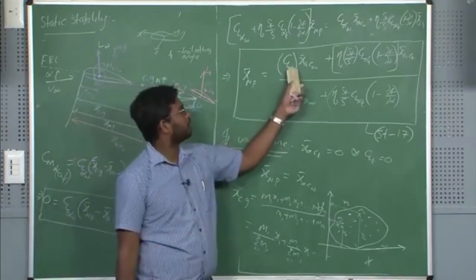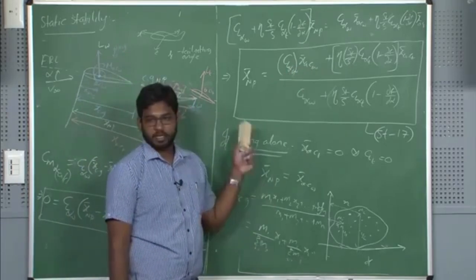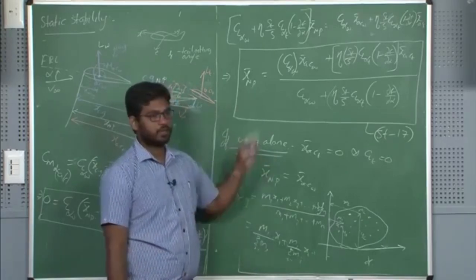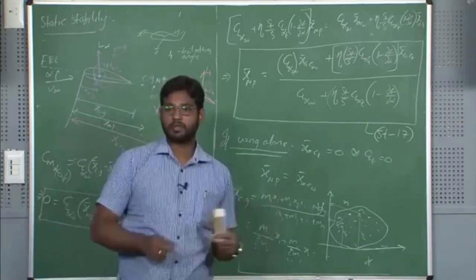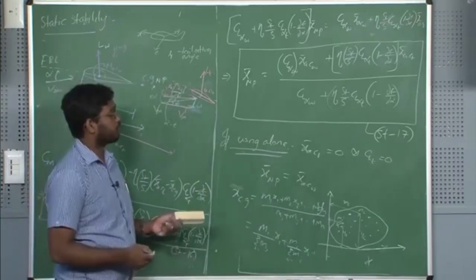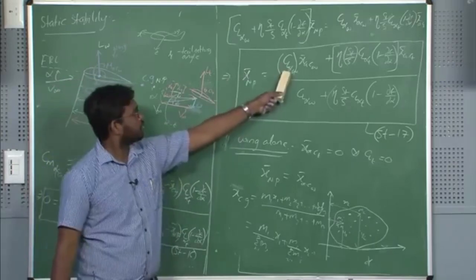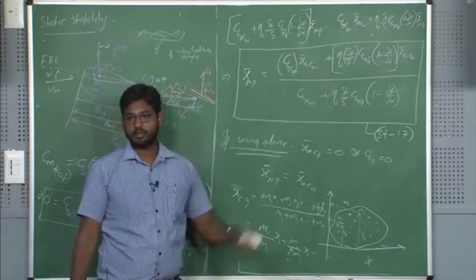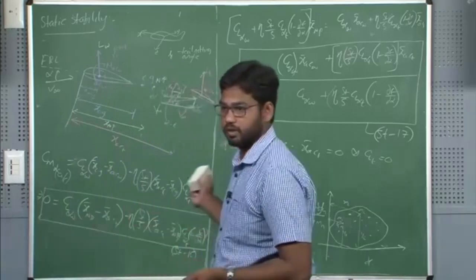The moment you decide the distance between wing and tail and the corresponding airfoil and planform geometry, you have fixed your neutral point. You must then ensure that your CG is ahead of this neutral point. The neutral point is a weighted average of the lifting characteristics — CL_alpha — of wing and tail.